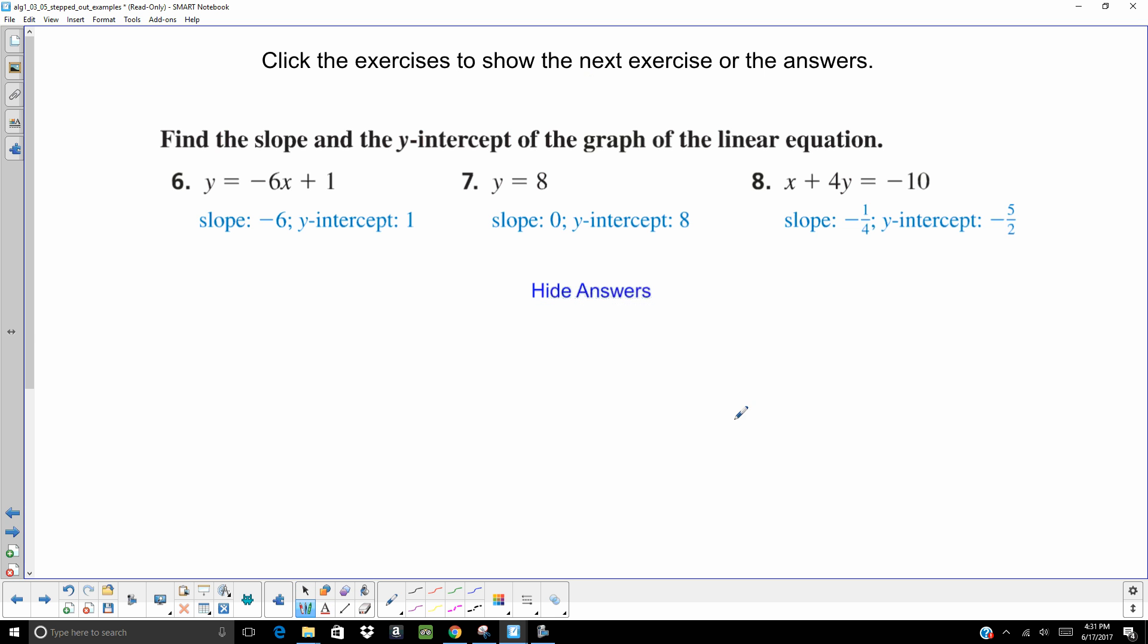On number 8, I think that was the tricky one. You needed to subtract x first and then you divide by 4. I usually write it as under each term is being divided by 4. So you get y equals negative 1 fourth x and then that 10 over 4 reduces to 5 over 2. And that's where they came up with those numbers.